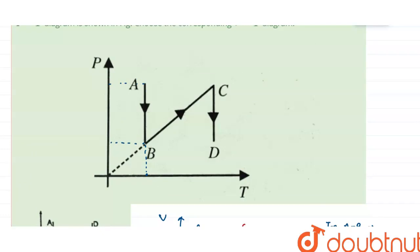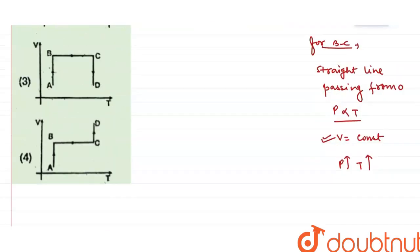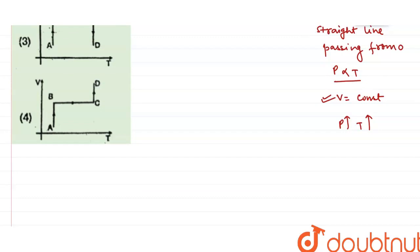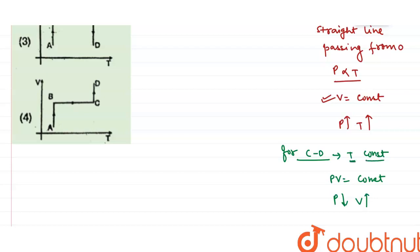The last process is C to D. As you can see, from C to D temperature is constant and pressure is decreasing. For C to D, since temperature is constant, from the ideal gas equation I can write PV equals constant. Pressure is decreasing, which means volume is increasing, because pressure is inversely proportional to volume.